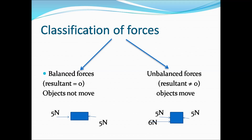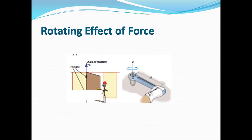Unbalanced force: the object moves because the resultant is not zero. For example, if two opposite 5 N forces and an additional 6 N force act on a block, the 5 N forces cancel out and the resultant is 6 N. This is an example of an unbalanced force, where a net resultant force acts on the object.